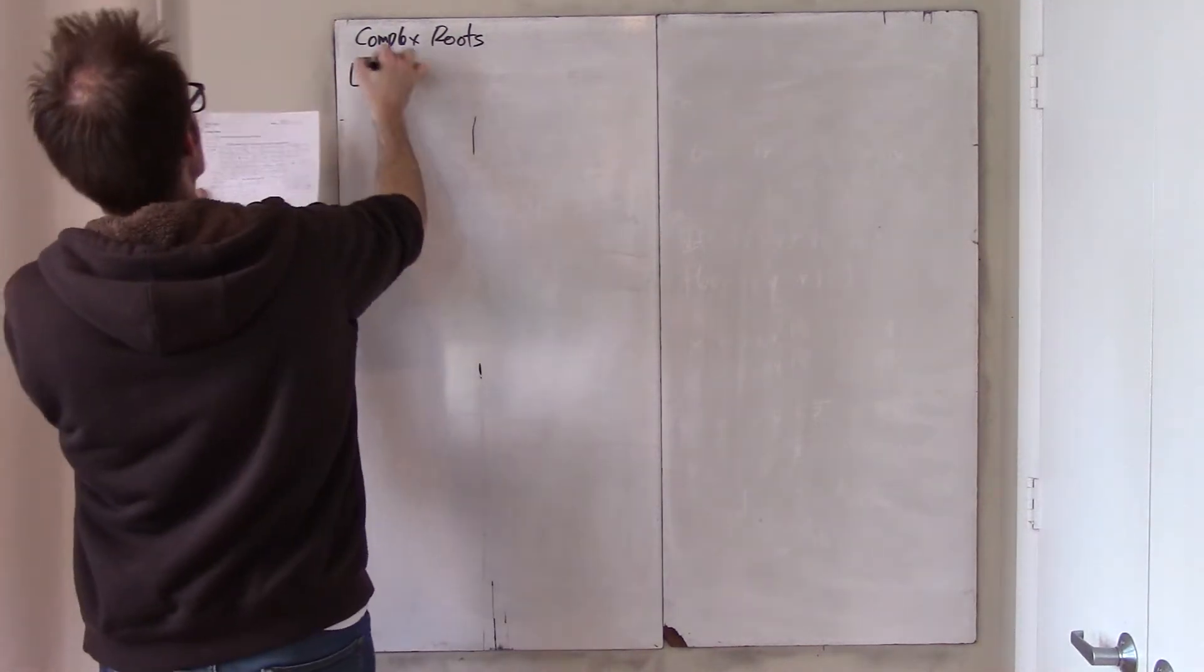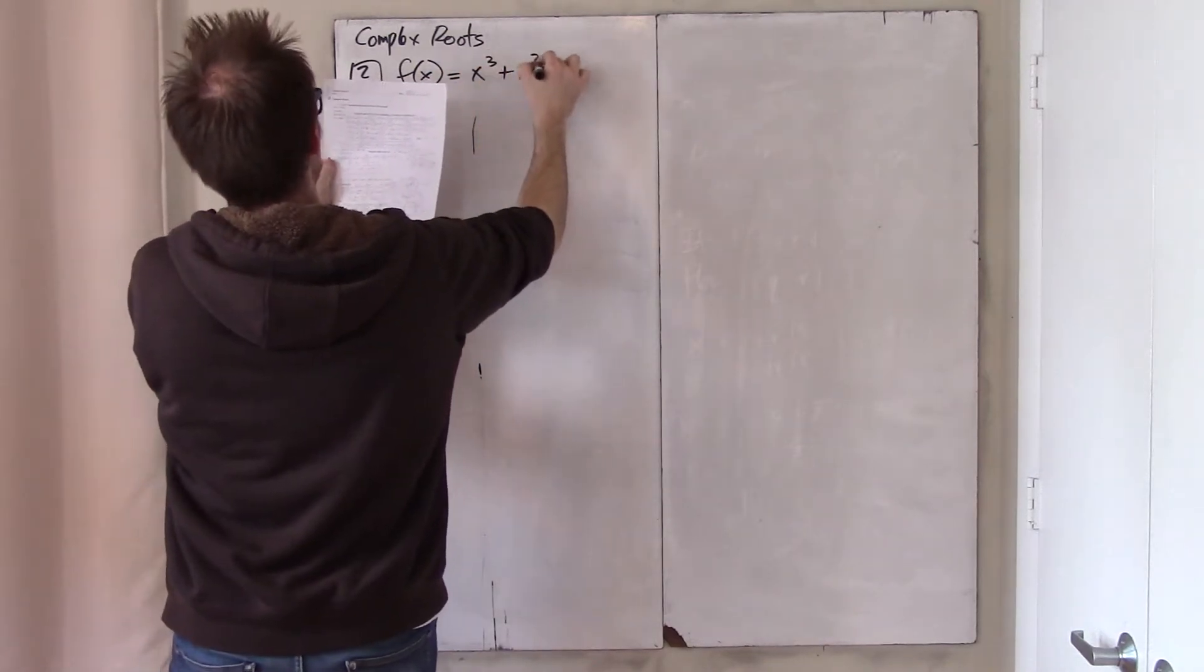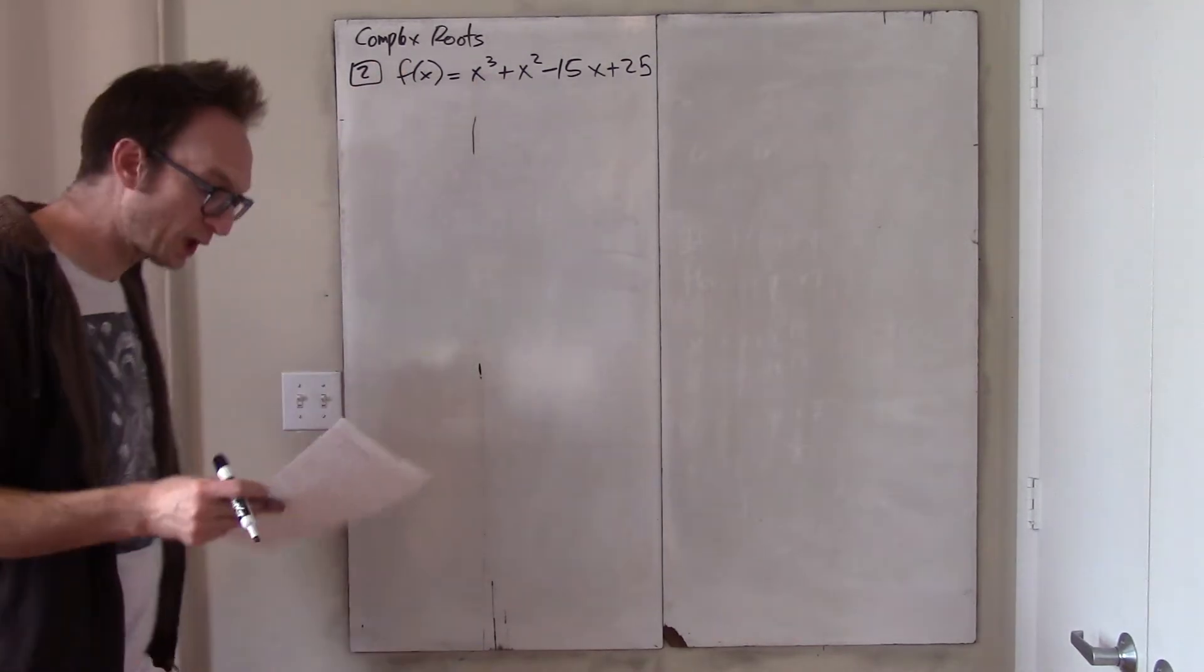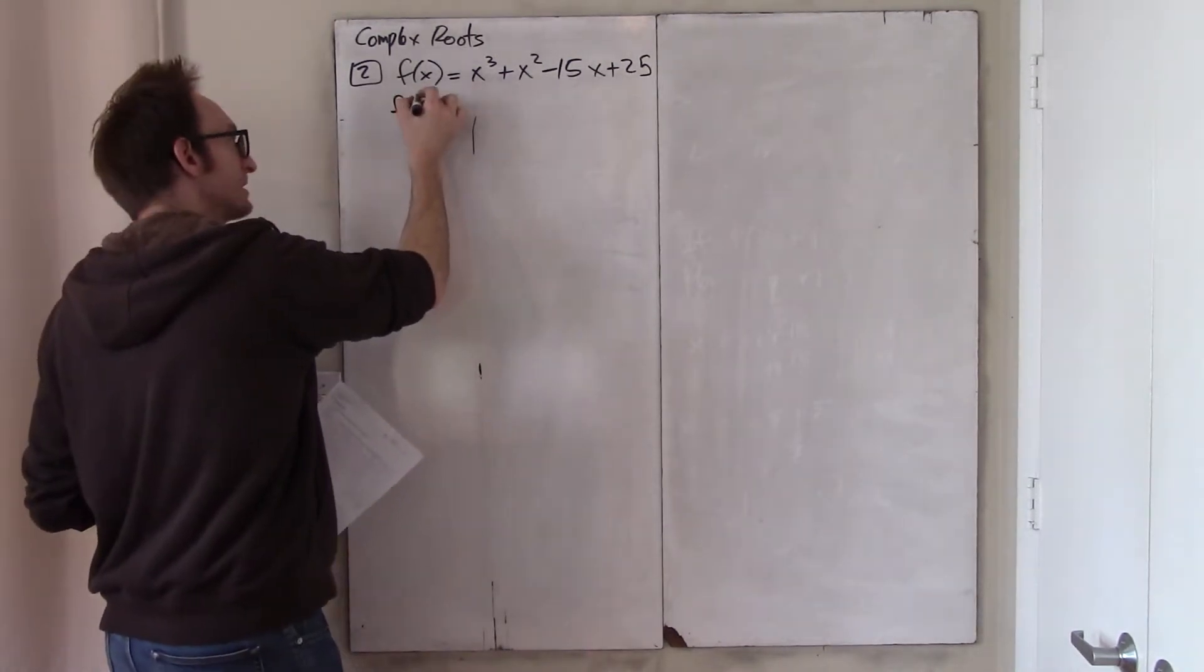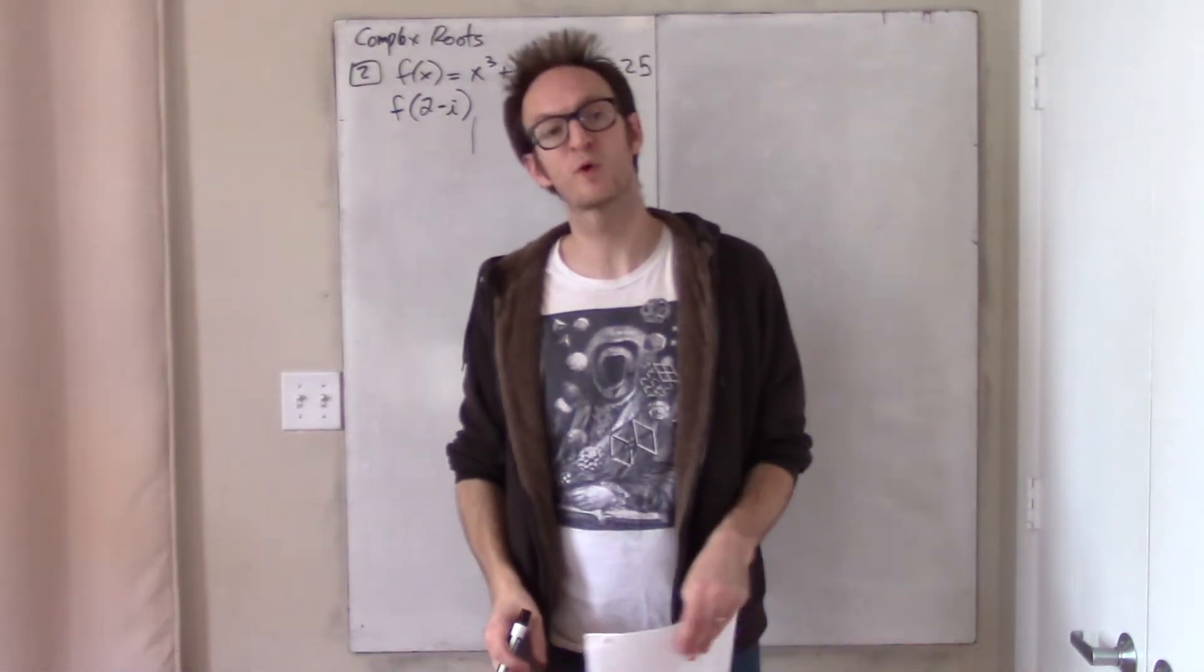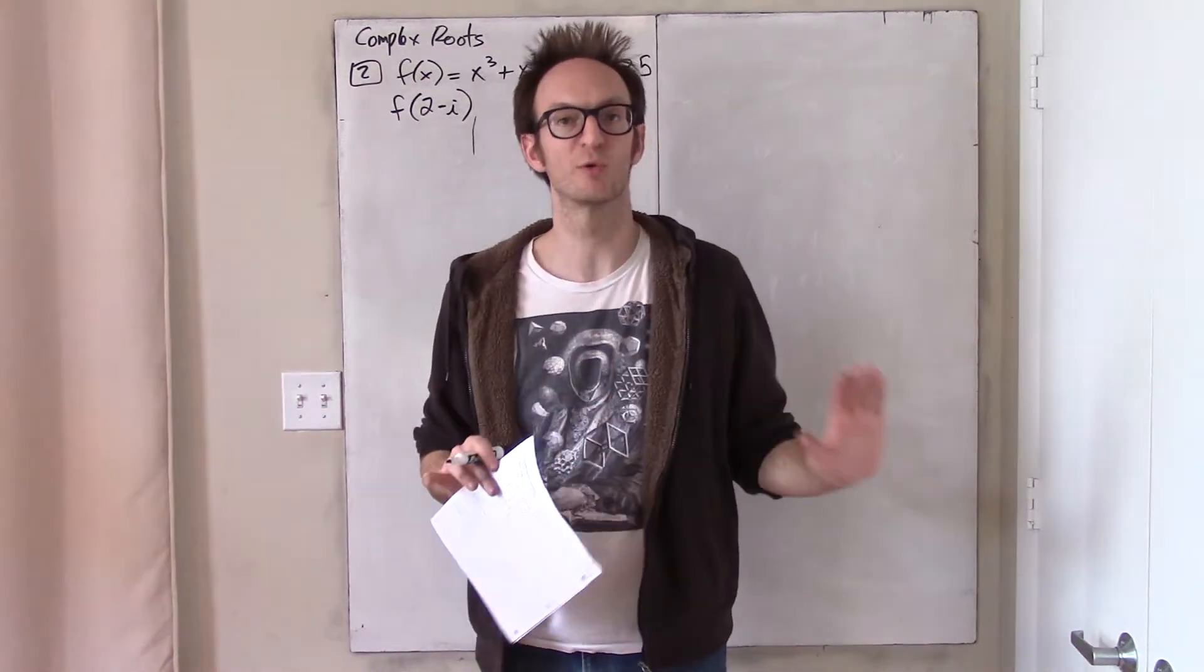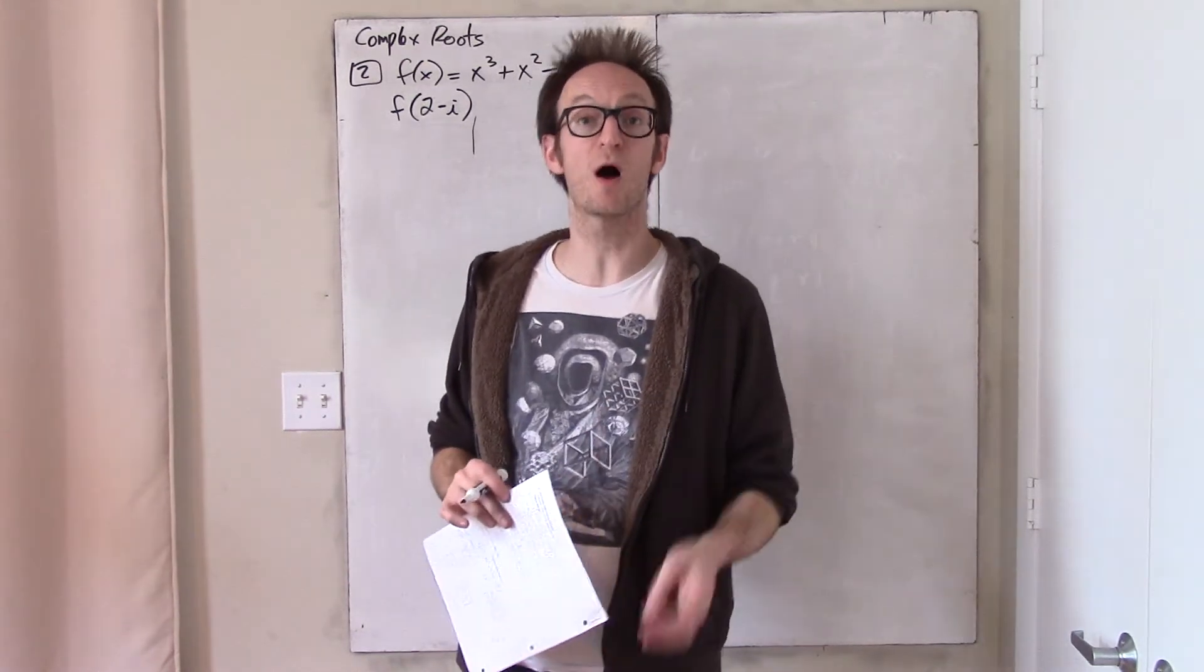Here is number two. We are given this function x cubed plus x squared minus 15x plus 25. And just notice by inspection, this is a polynomial. The polynomial has real coefficients, and so all of our theorems apply. I should also note that there's no guessing required on this particular packet at all. I'm going to give you right now sufficient information such that you can find all of the roots of this polynomial.